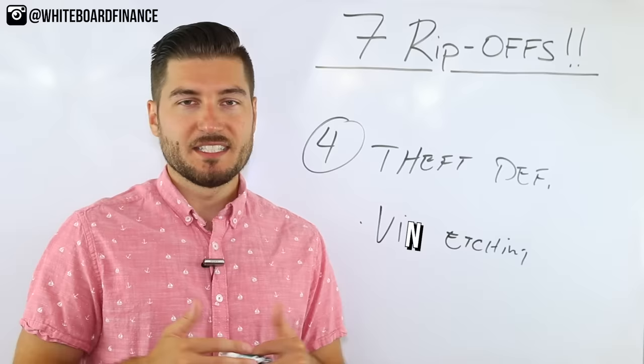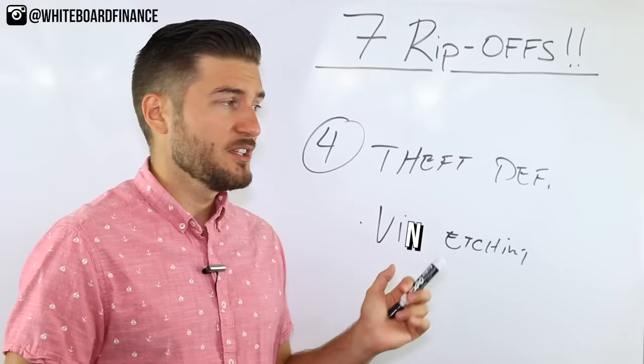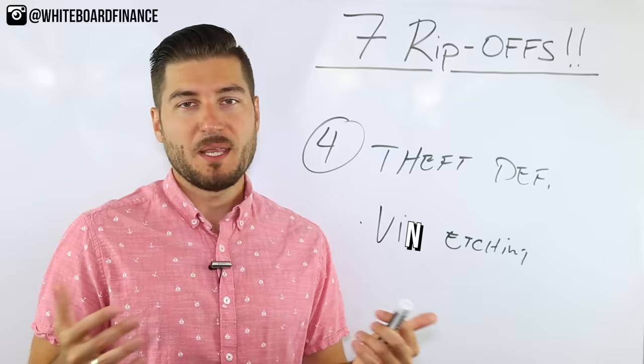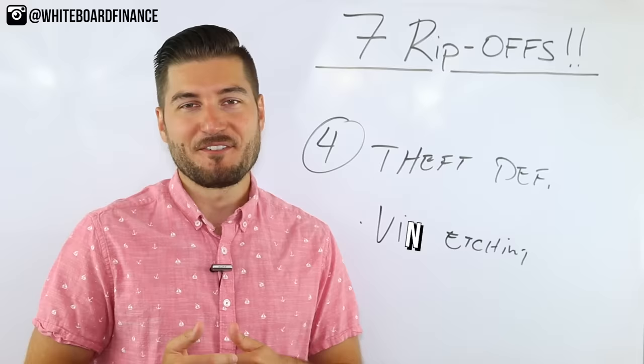Typically the dealership is going to approach you and pitch you with kind of like a money back reimbursement, so if your car gets stolen and we did the VIN etching for you, we'll give you back 2,500 bucks or 3,000 bucks or whatever. Yeah, maybe they paid out one or two of these in the history of the dealership but ultimately this rarely happens if ever, and who knows how much money they've made selling these things.